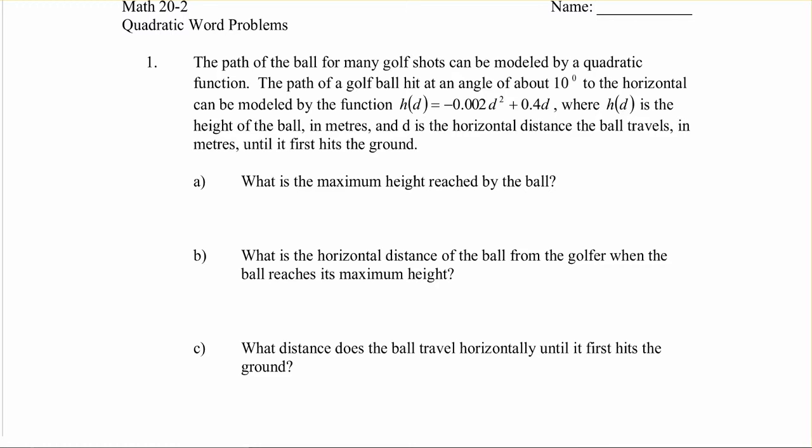Okay, so this first one says the path of the ball from any golf shots can be modeled by a quadratic function. The path of a golf ball hit at an angle of about 10 degrees to the horizontal can be modeled by the function H of D is equal to negative yada yada yada, where H of D is the height of the ball in meters and D is the horizontal distance the ball travels in meters until it first hits the ground. So it says what's the maximum height reached by the ball?